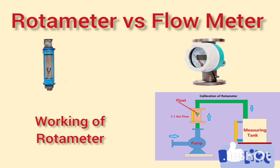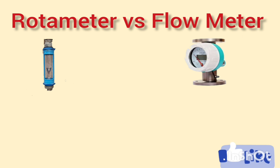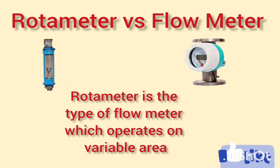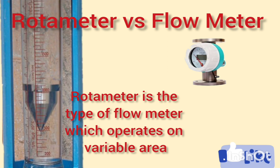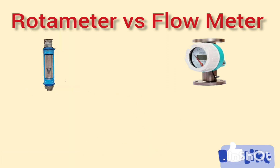Let's start with the basic definition of rotameter. A rotameter is a type of flow meter that operates based on the principle of variable area. It consists of a tapered tube with a float inside that rises or falls depending upon the flow rate of the fluid.